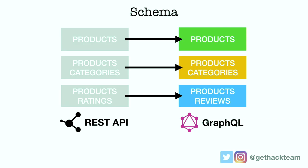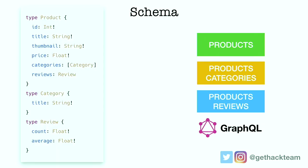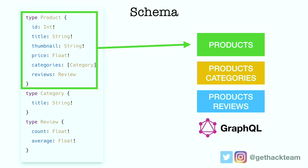When you construct a GraphQL schema on top of a REST API, on the left you can see the API endpoints — products, categories, and ratings. When you construct your schema, you'll probably take these over: products are going to be one type, category a different type, and reviews a different type as well. You can see I've created one for product with an ID, title, thumbnail, price, and categories, cutting out a lot of fields so I'm not using the entire JSON object. I selected which fields I want to use. I did the same for category, and as you can see it returns an array of the category type.